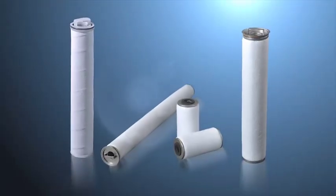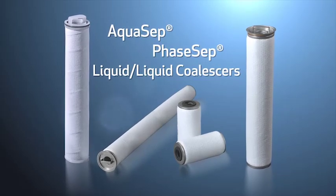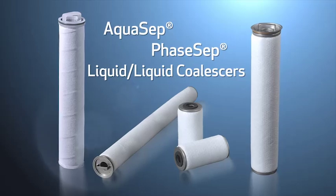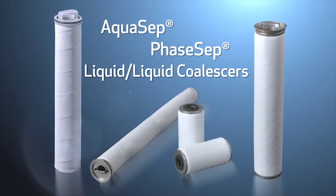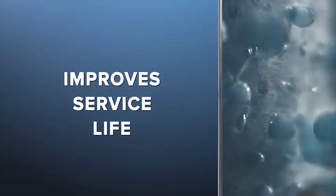Experience the difference of Paul's aqua-sep and phase-sep liquid-liquid coalescers, offering enhanced separation performance over sand beds, electrostatic precipitators, and API separators. Innovative separation technology that improves process reliability, delivers consistent fluid quality, improves service life up to one year or more, reduces maintenance and waste disposal costs.